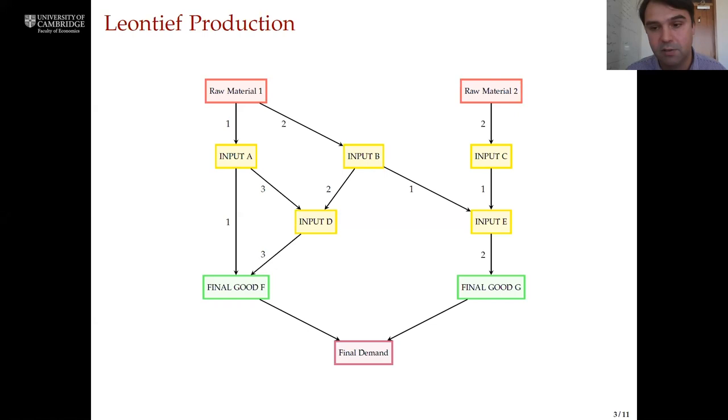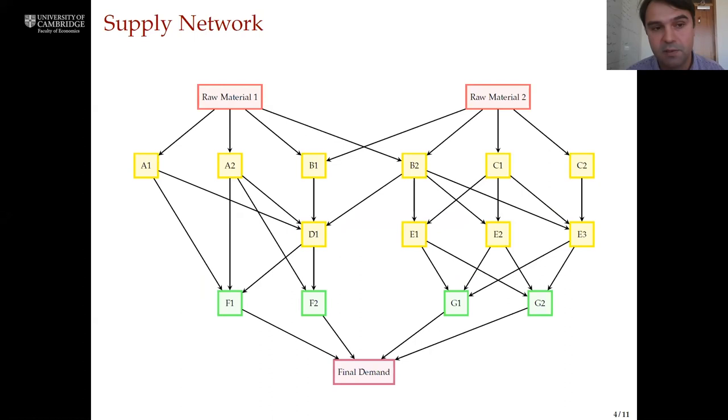On top of this representation of production technologies we can add firms to get a supply network. So in this example we see that there are two producers of good A, two producers of good B, two producers of good C, one of good D, three of good E and so on.